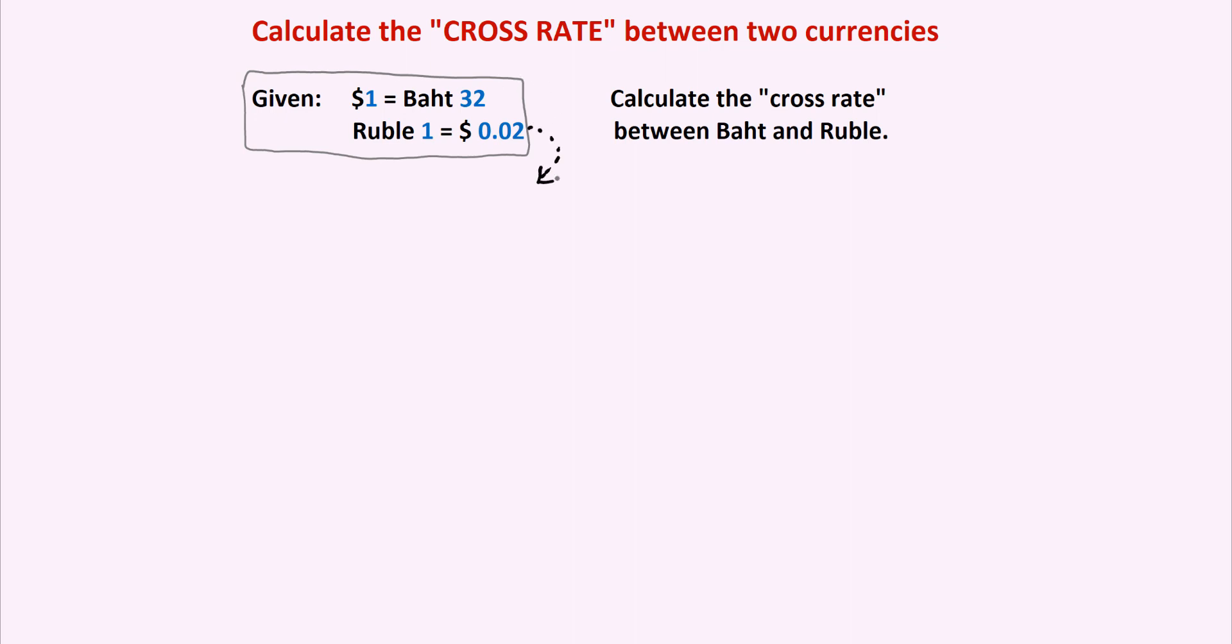So let's take this one and first rewrite it as follows. We want to have one dollar, right? How do we get one dollar when we have $0.02 right now? Well, we need to divide by 0.02 and we do that division for both sides of this exchange rate.